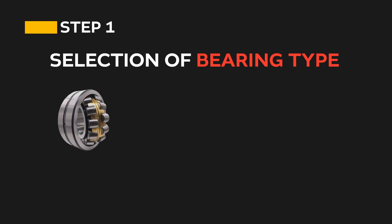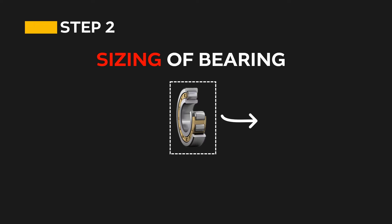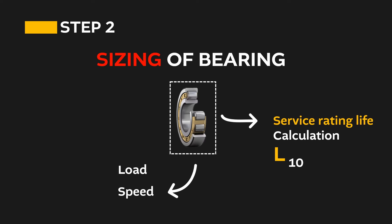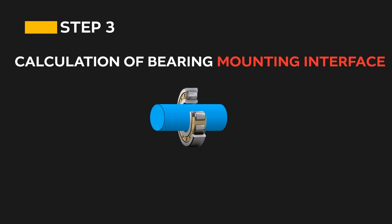So in this video, in this part, we are going to learn how to select the right type of bearing as per the application and operating condition. And in the next part, we will learn how to size the selected bearing type, or how to calculate the bearing service rating life on the basis of operating parameters like load, speed and type of bearing.